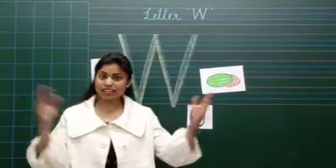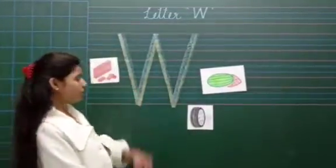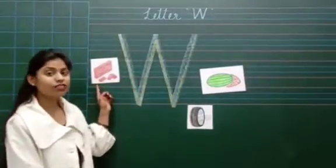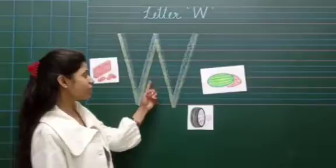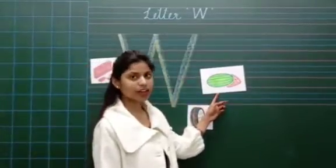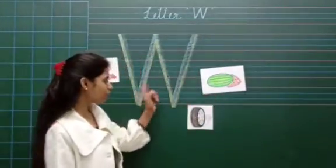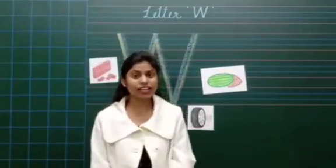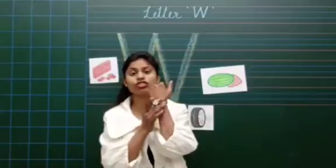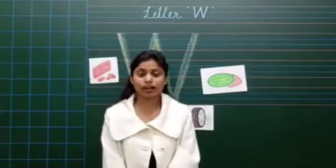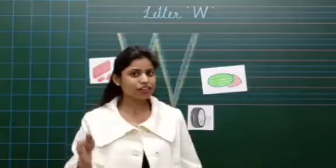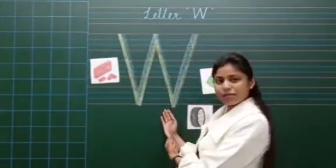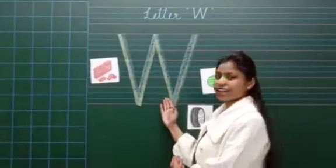But let's sing a song on letter W. W is for Wall. W is for Watermelon. W is for Watch. W is for Walk. This is the letter W.